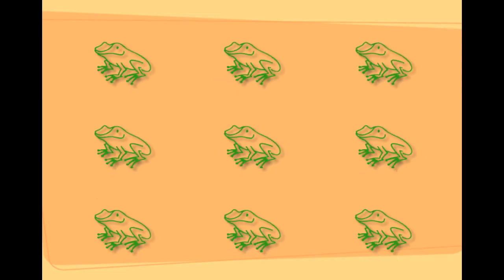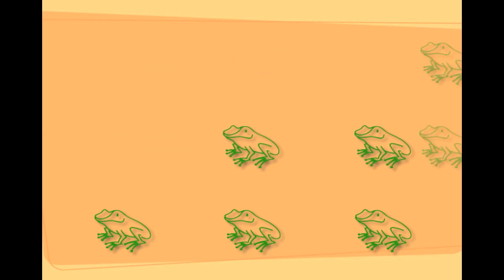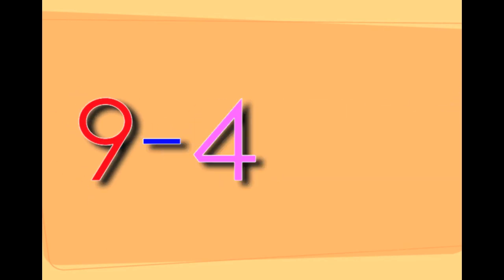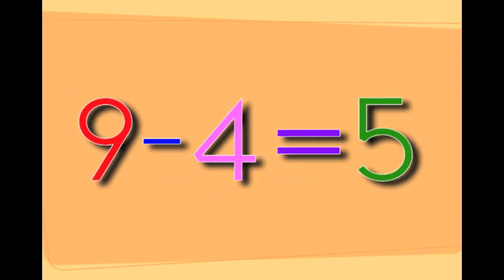There are nine frogs. If you take four frogs away from the nine frogs, it leaves you with five frogs. Nine minus four equals five.